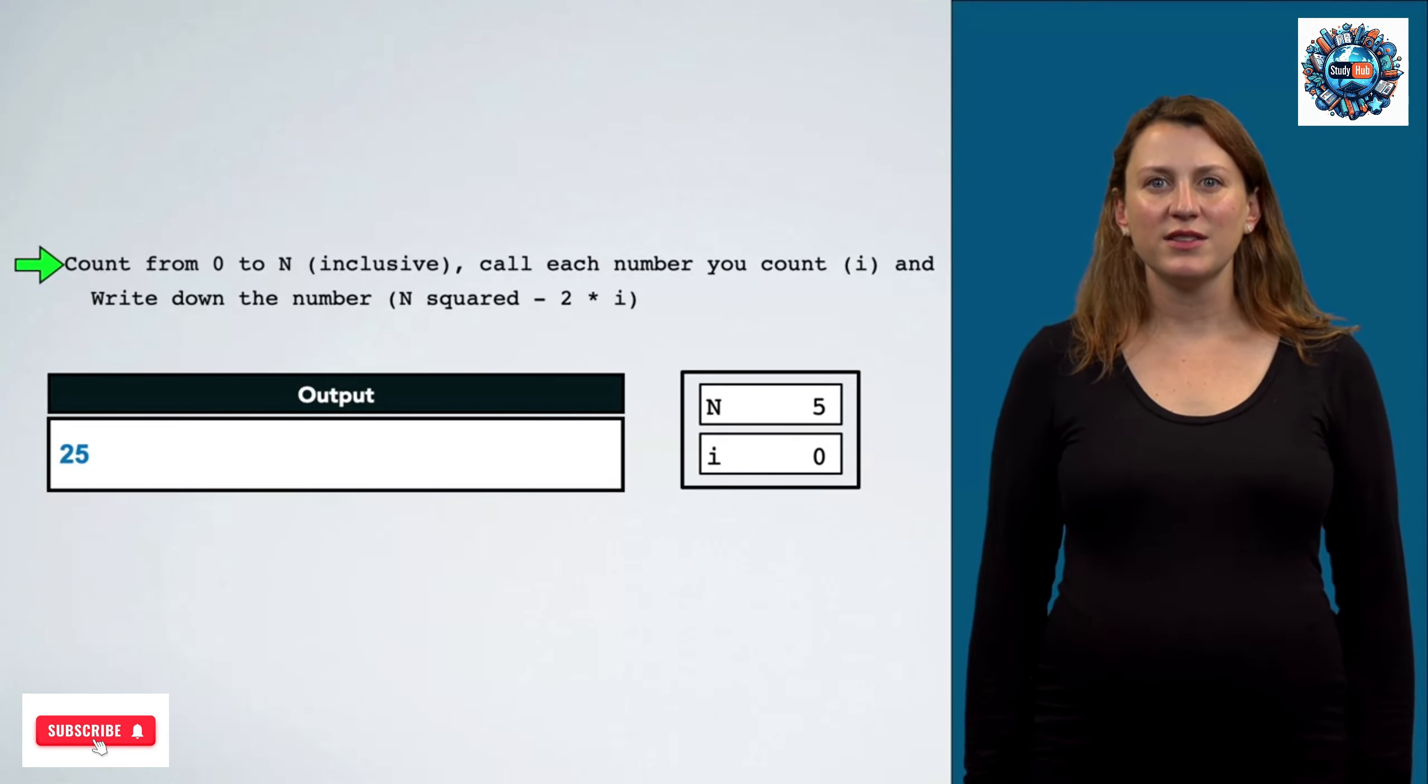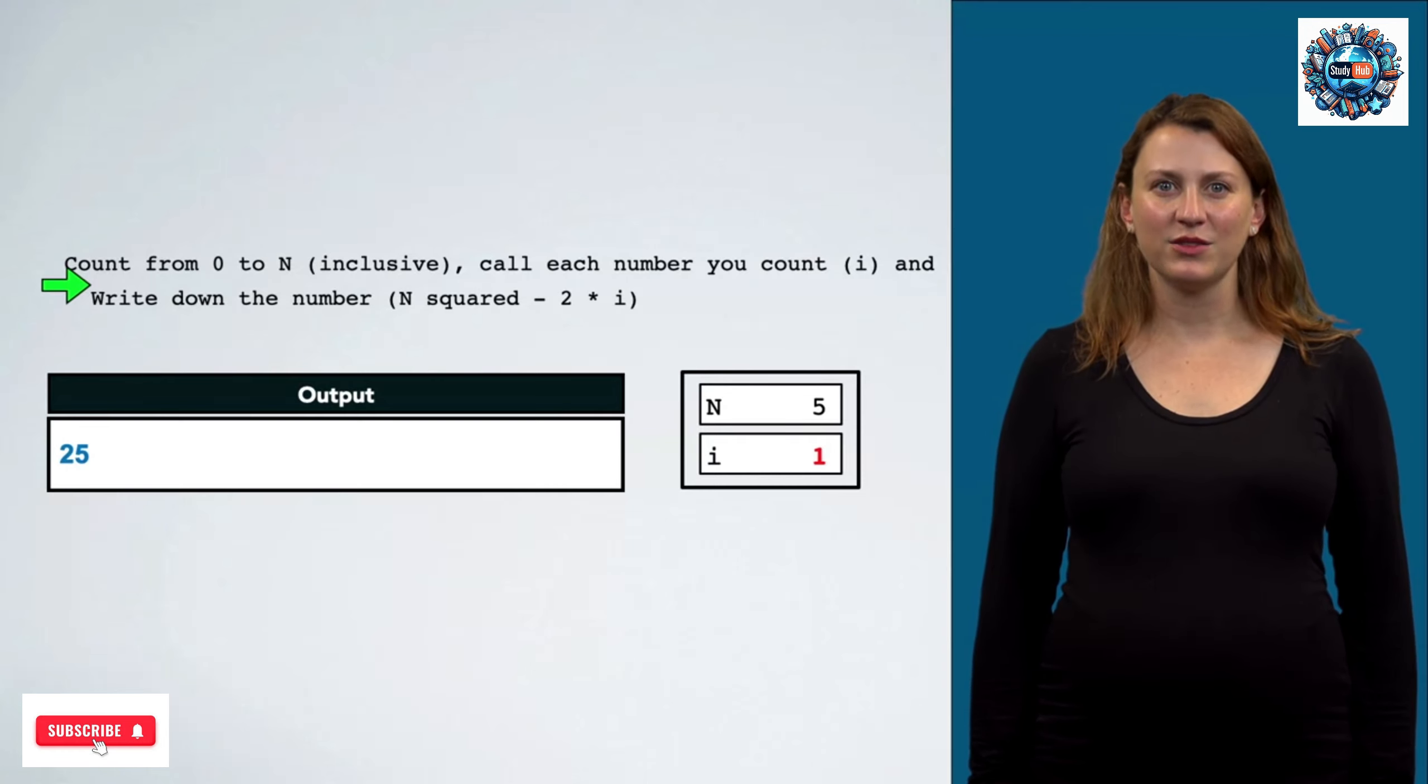Now this process is going to repeat again and again. Now i is going to have the value 1. Once again, we're going to compute n squared minus 2 times i. This is the same as last time, except i has the value of 1. This is 25 minus 2, or 23. We write that to our output box. Now we just completed i equals 0 and i equals 1, and we're trying to get all the way up to i equals 5.